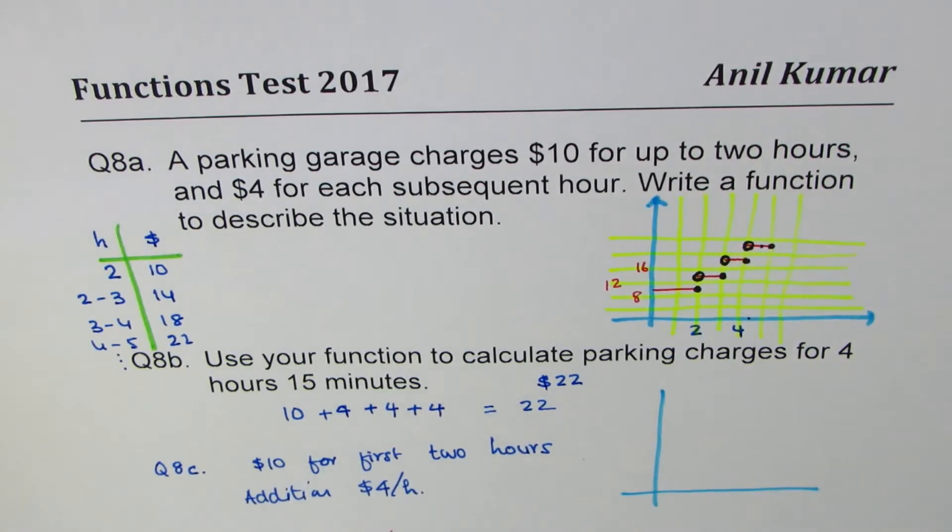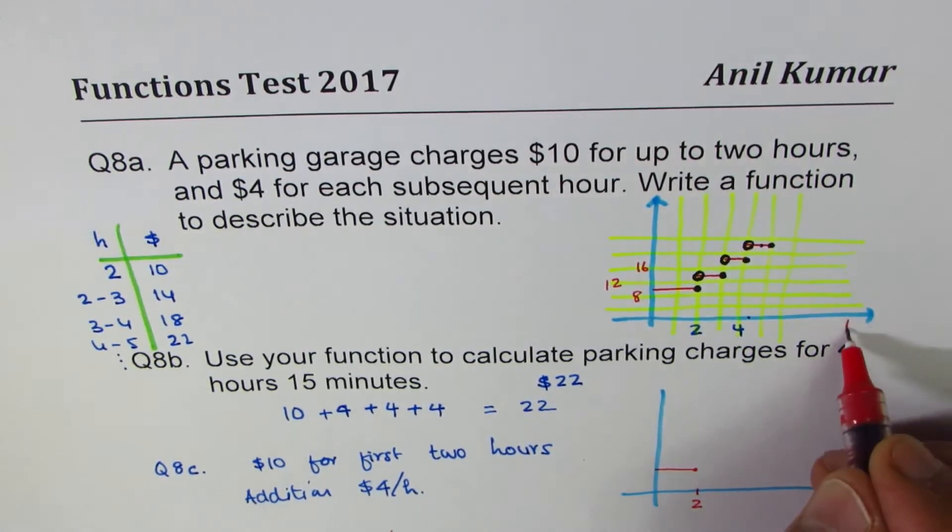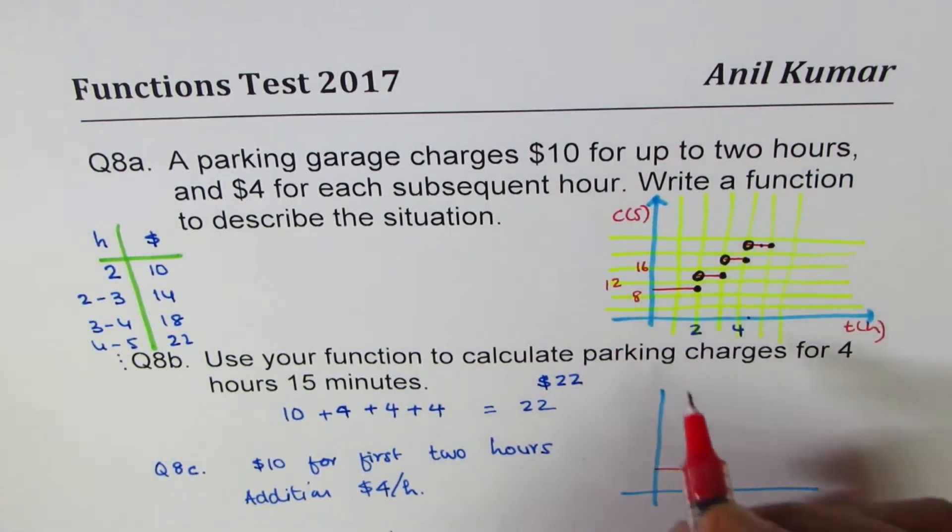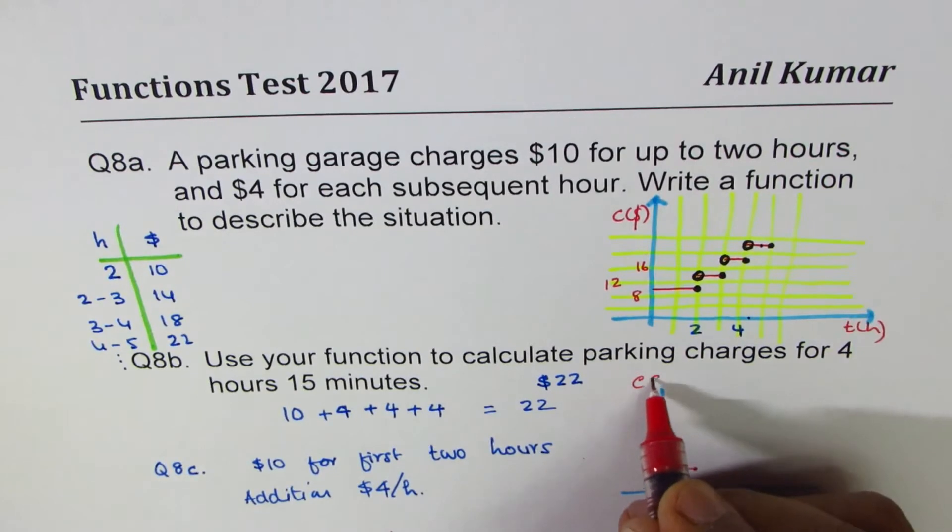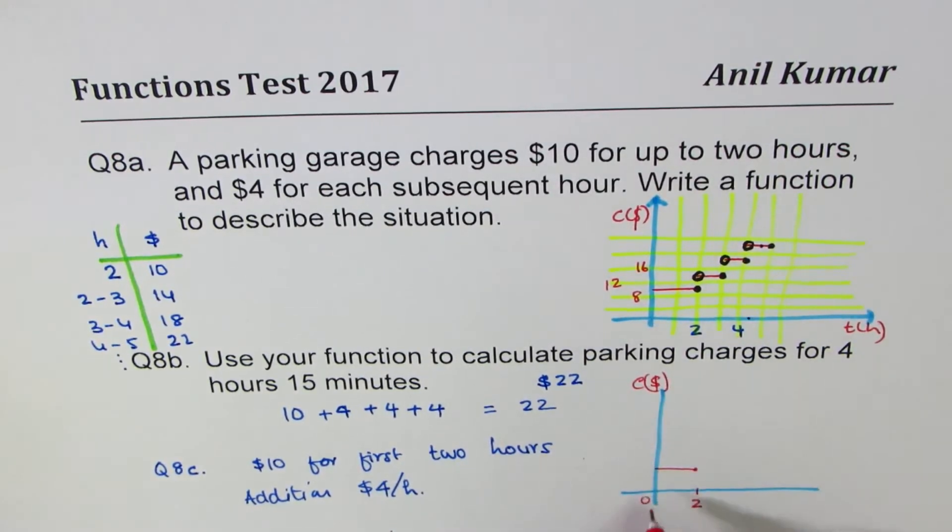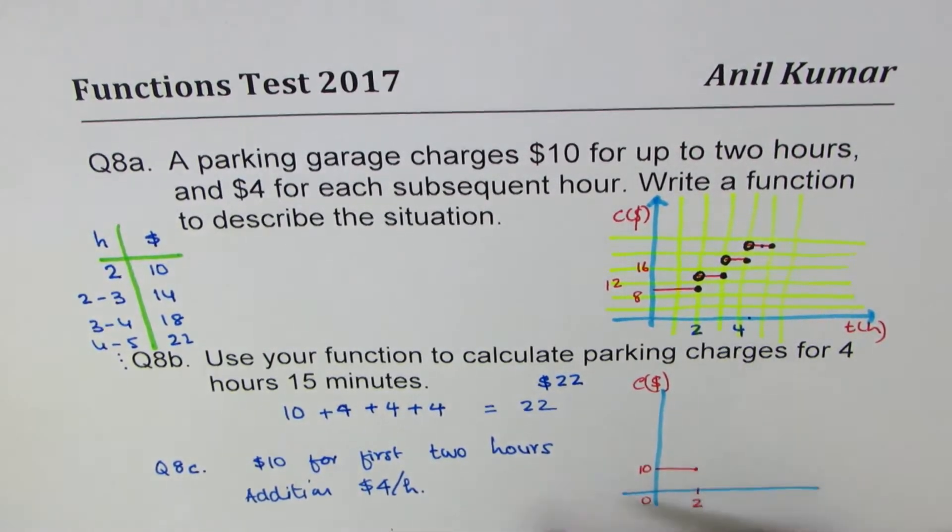In that case, it is kind of a constant function for the first two hours. Where this is two hours, time in hours, and cost in dollars. Now, for first two hours, $10, and after that, $4 per hour.